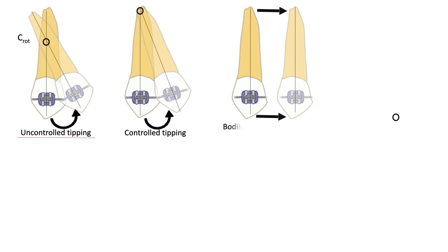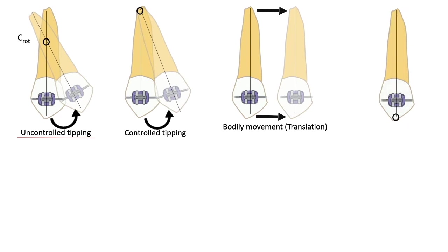In translation, the center of rotation is non-existent or in mathematical terms approaches infinity. In root movement, the center of rotation is located at the crown tip, while the root is free to move in the direction of the force.